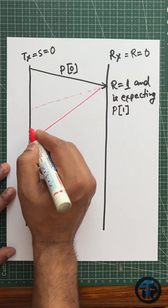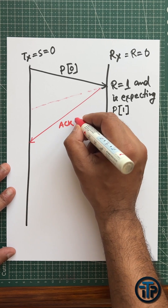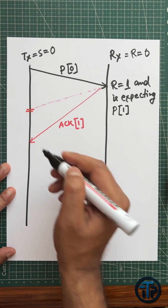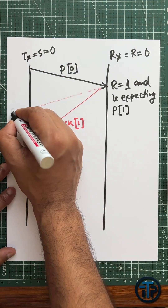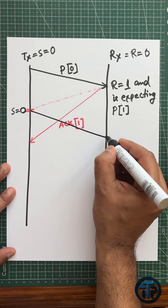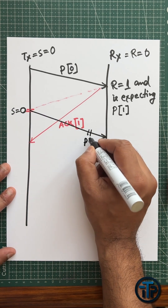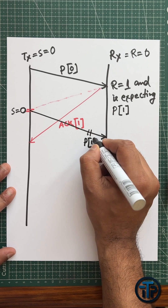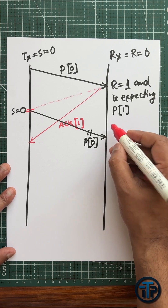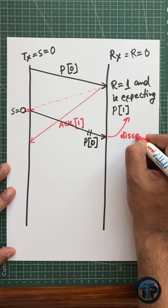When acknowledgement one has been received at the transmitter end, and then the timer expires, the transmitter has to resend the same packet, that is s equals zero, to the receiver. So it is basically p equals zero, but this packet would be discarded — because it has already been received by the receiver — but again the receiver will send acknowledgement one.